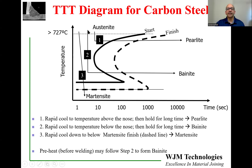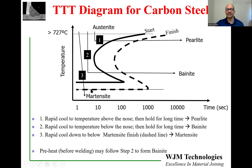If you take that same component at high temperature and cool it quickly below the nose of the diagram, then hold it for a long time, you get a phase called bainite. Bainite is a modified version of pearlite but much stronger and harder. The third option is to cool the steel component so fast that you miss the nose entirely and go all the way down to room temperature — there you will convert the austenite to martensite.